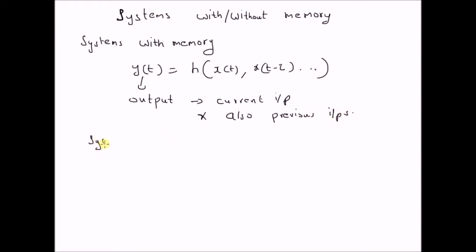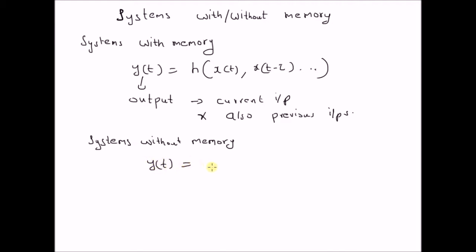The systems without memory can be defined as follows. The systems without memory basically depend only on the current input. That is, the output y(t) is a transformation of the current input and it does not depend on any of the previous inputs. So it depends only on the current input.